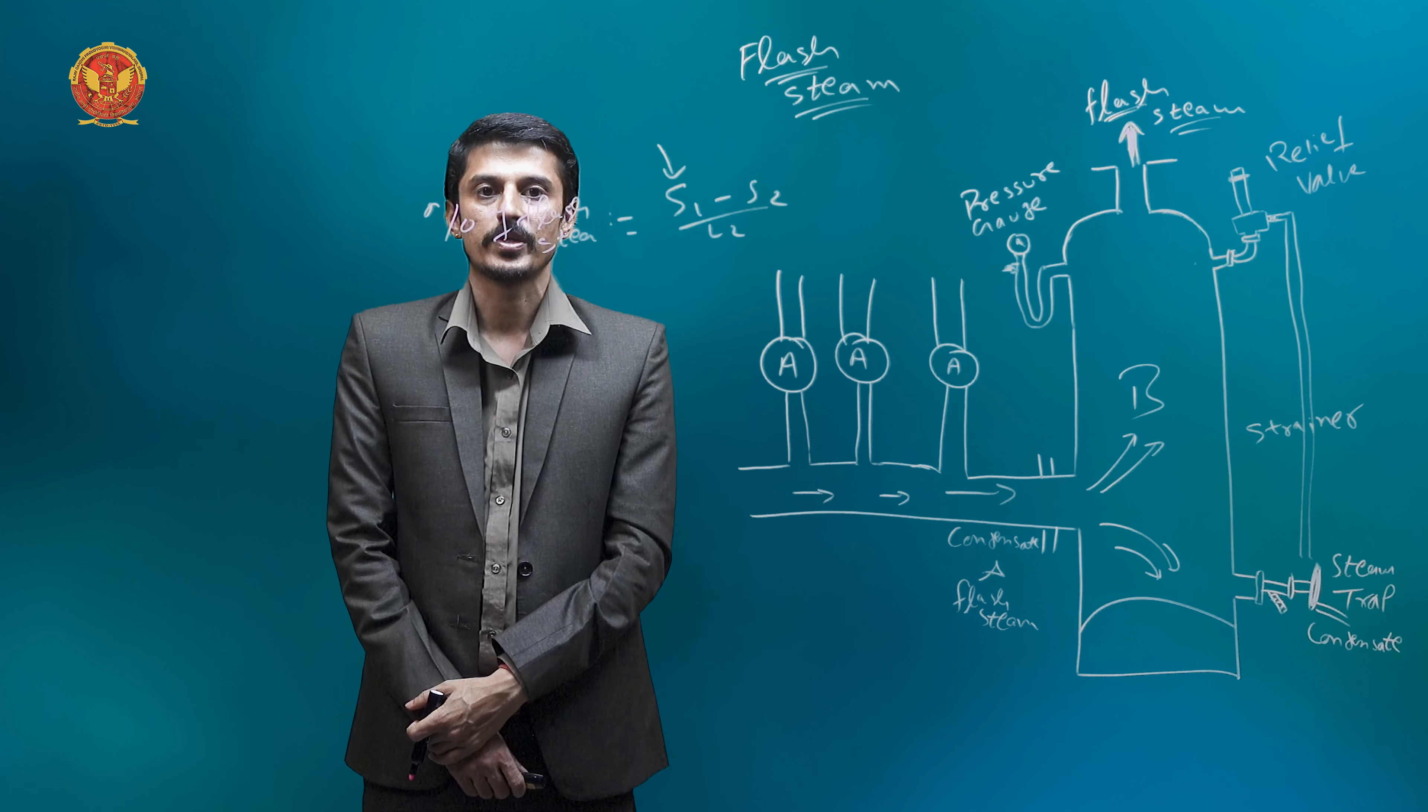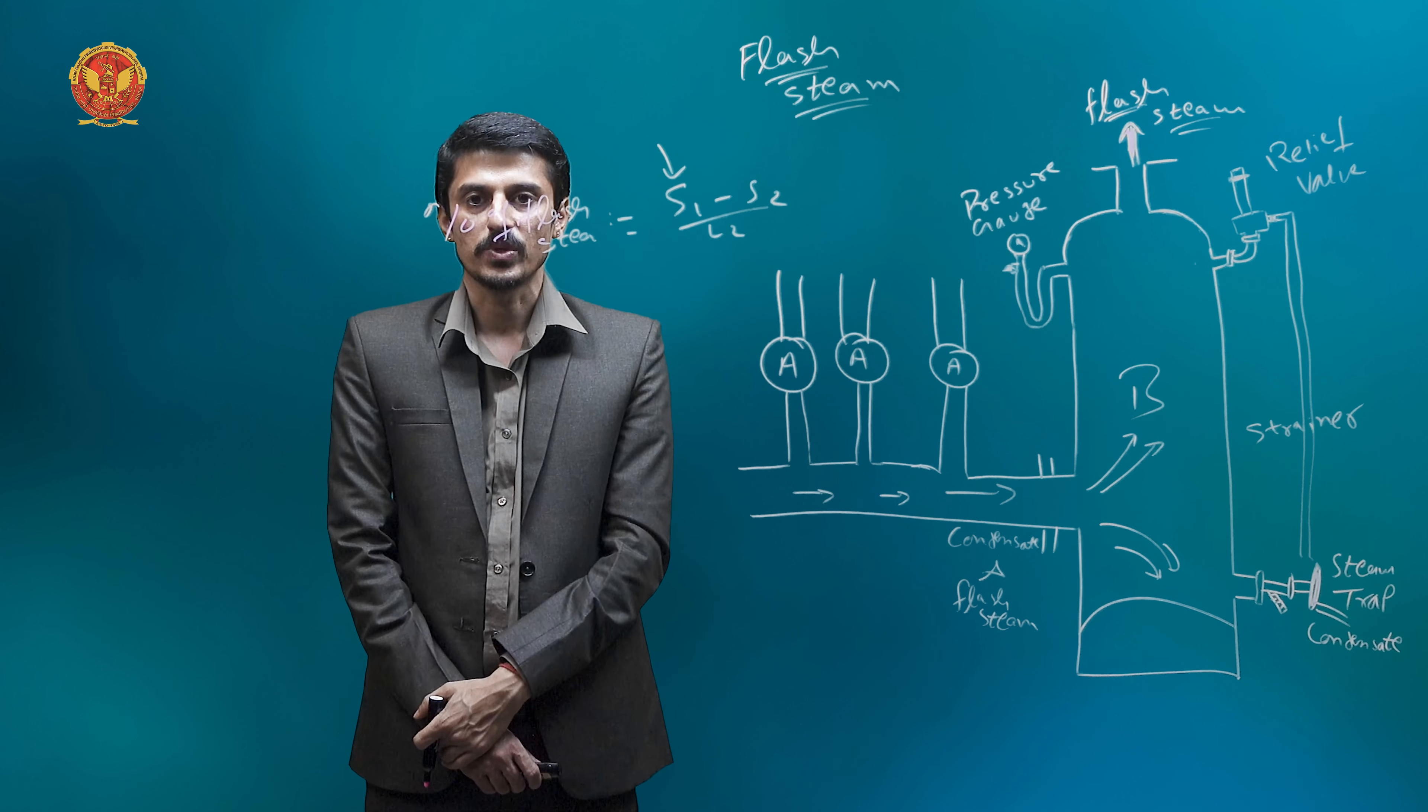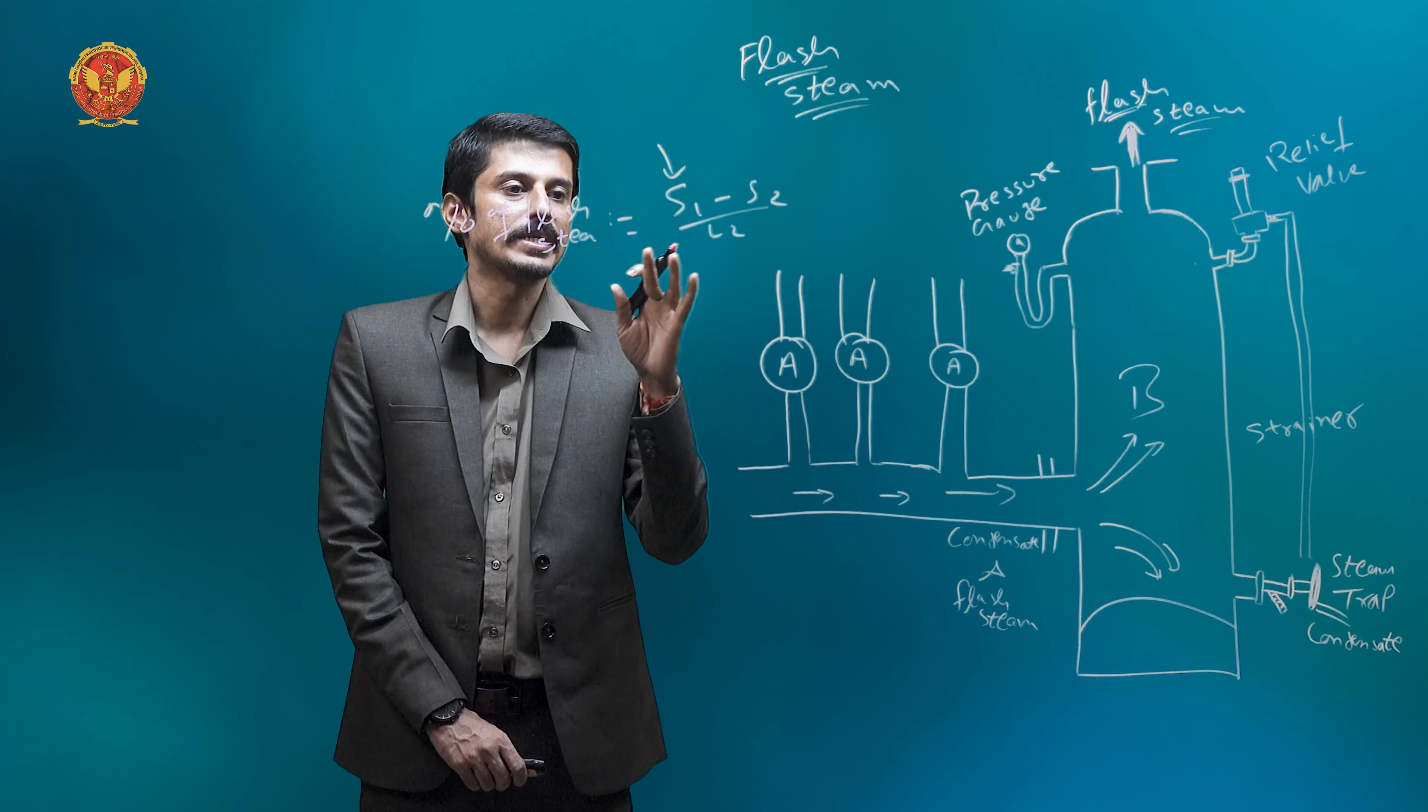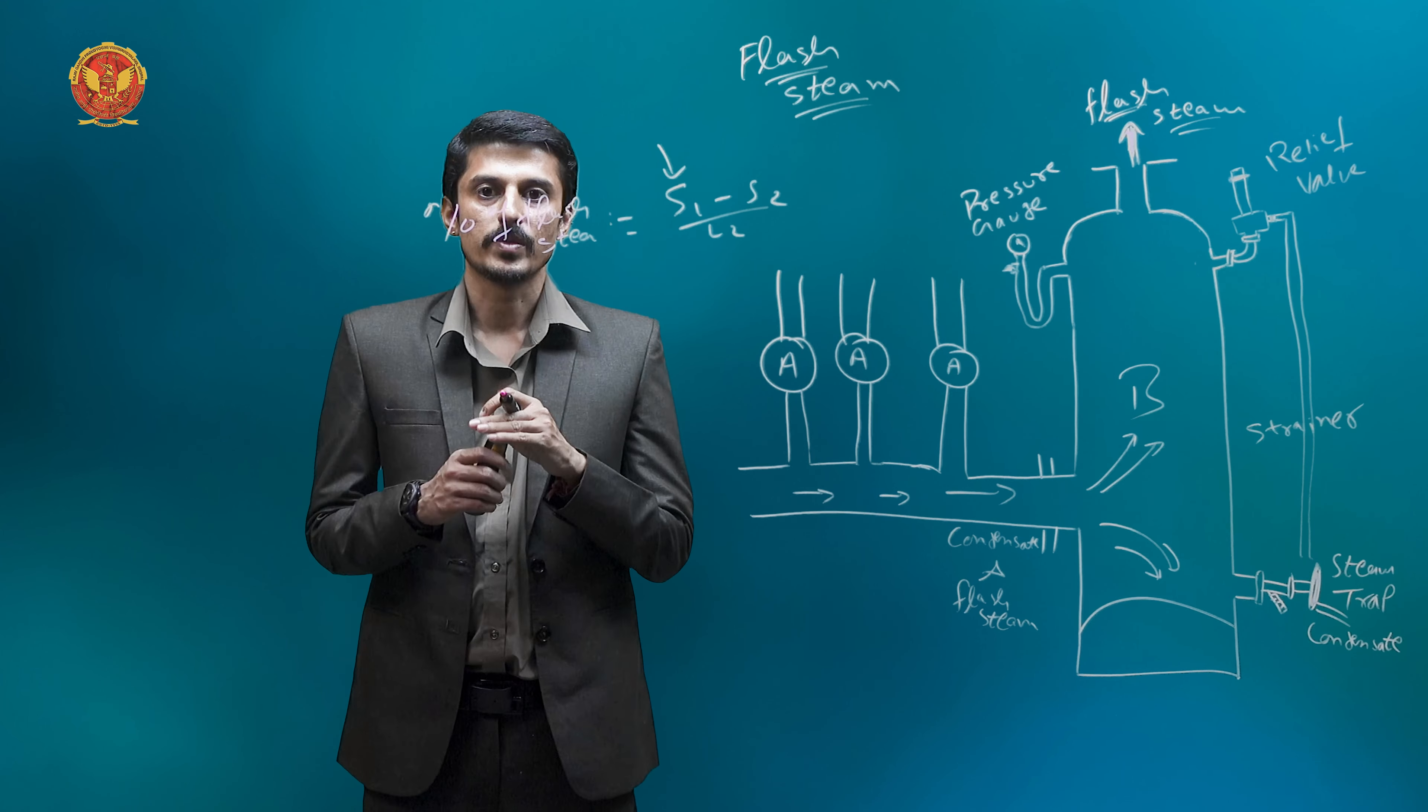Whereas S2 is the sensible heat of steam at lower pressure, which is the lower pressure steam at which it has to be flashed. The value is S2. L2 is latent heat of flash steam, which is the lower pressure steam.